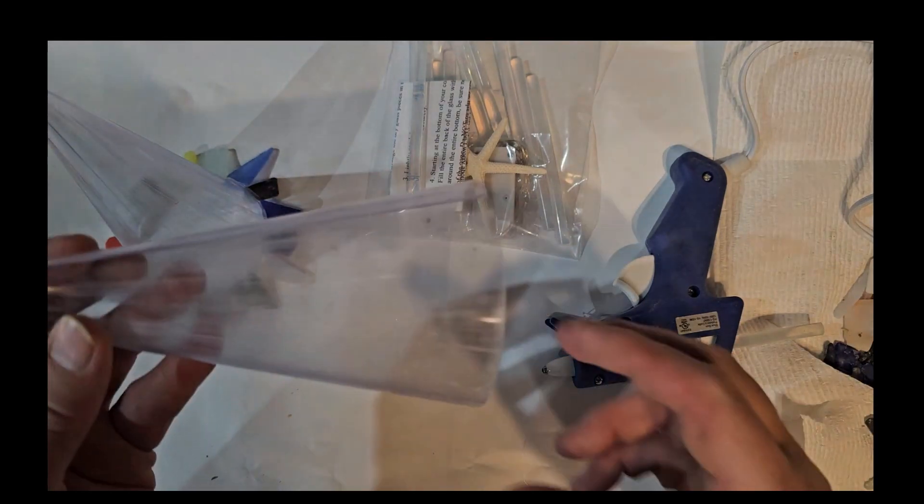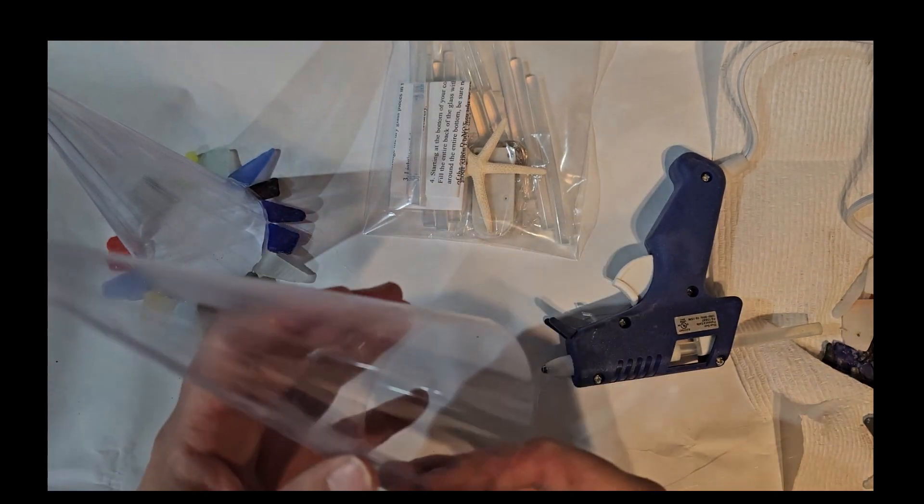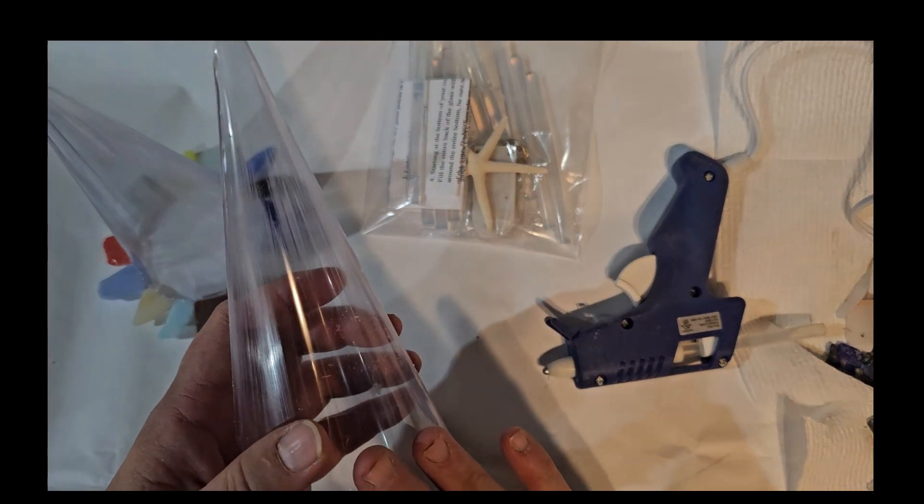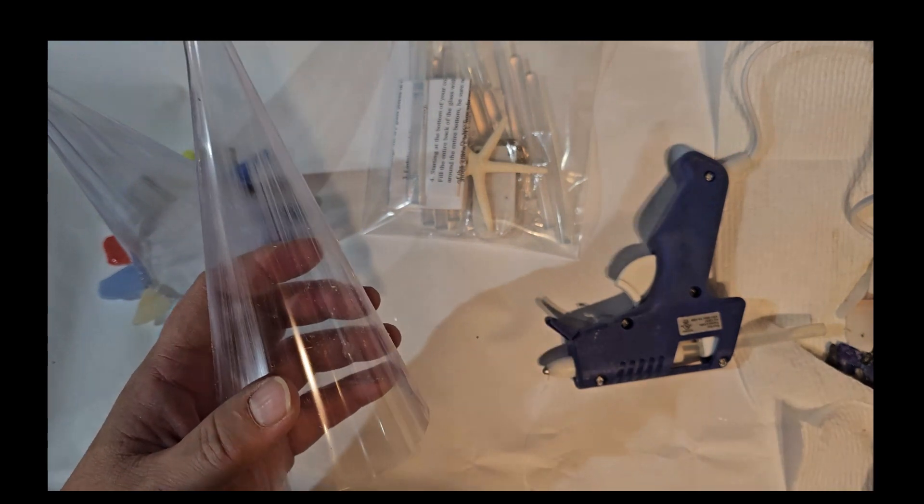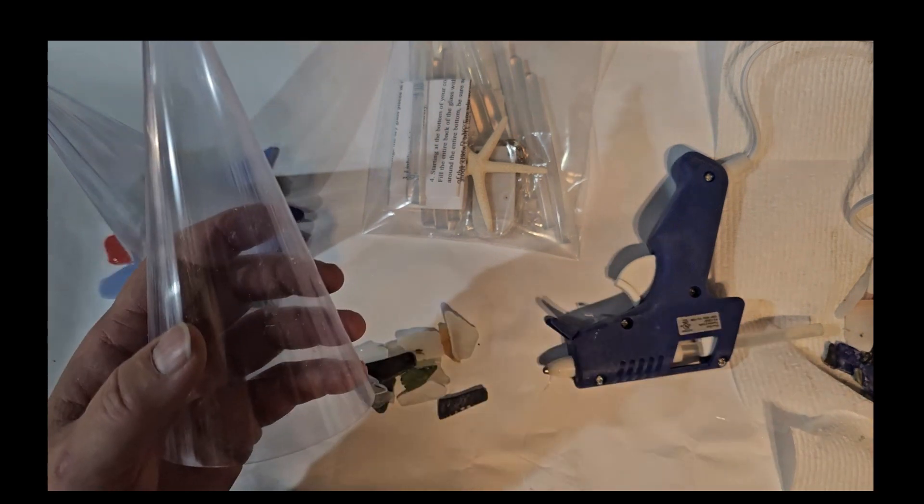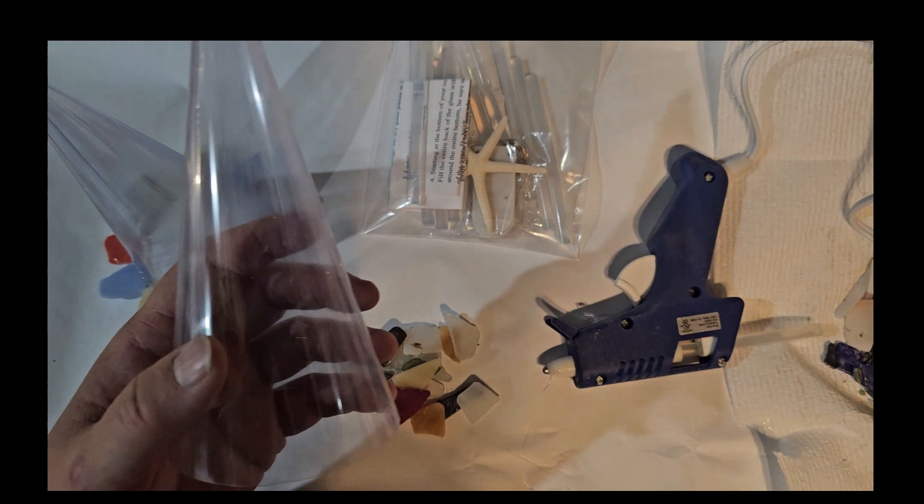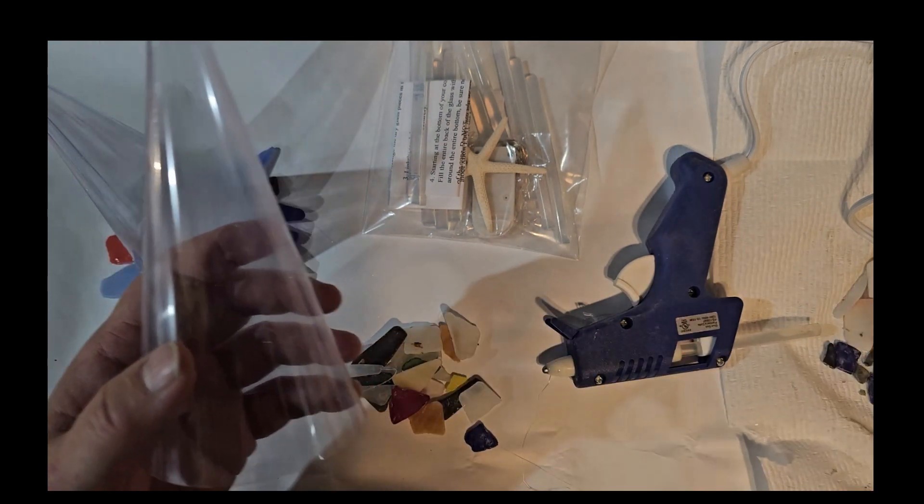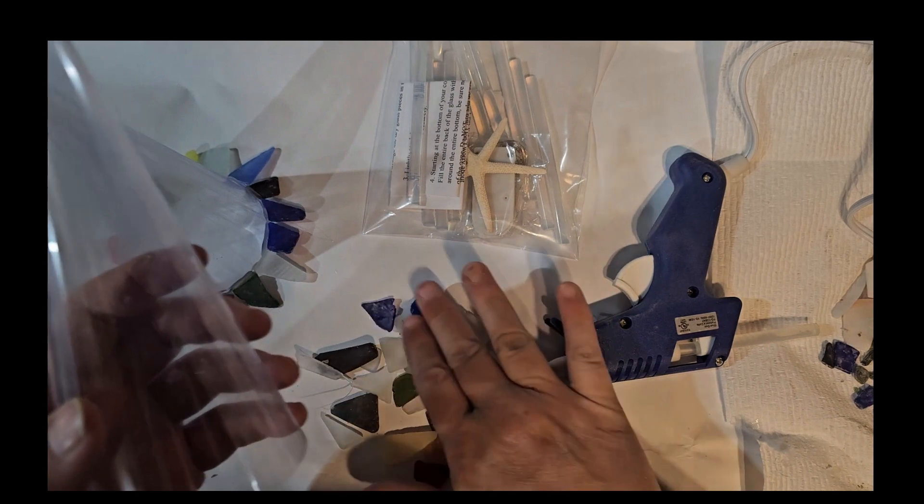So you should have received a 6.75 inch cone in the mail. It has already been sandpapered so there is no need to sandpaper it. You would have also received a 2 to 3 pound bag of tumbled sea glass. The first thing you want to do is wipe off some of that sea glass and find some of the larger pieces similar to this size right here.